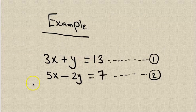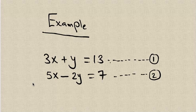In this example, we have two equations. One is 3x plus y equals 13, and the other one is 5x minus 2y equals 7. We want to solve these two simultaneous equations by using the substitution method.